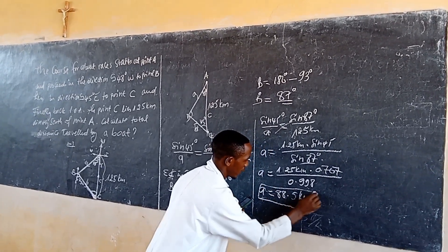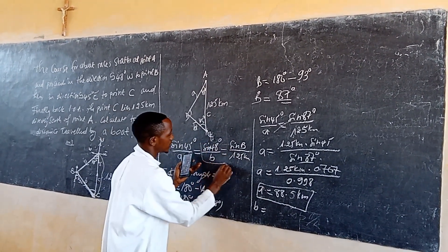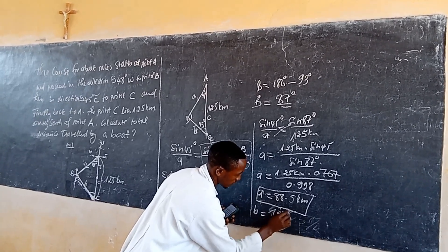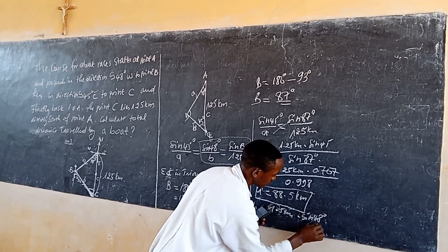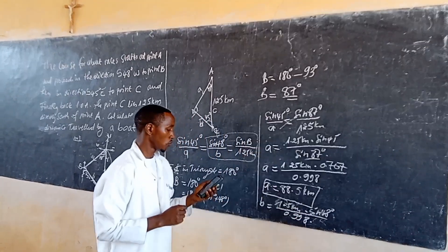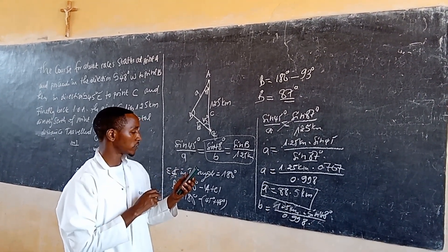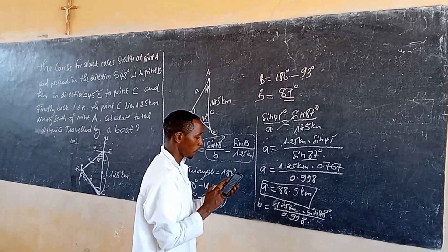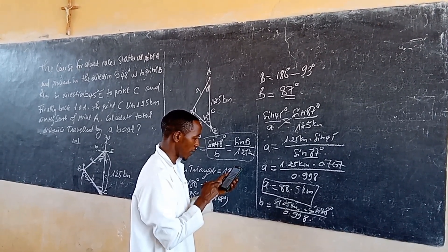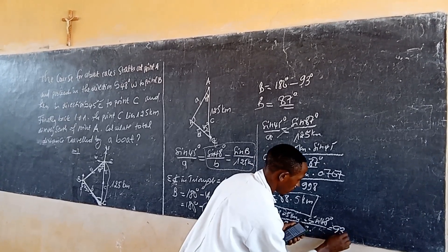So this is the value of A. Now we can find the value of B. To find B we use the same formula: B equals 125 km times sine of 48° divided by sine of 87°. Sine of 48° equals 0.743, so B equals 125 × 0.743 ÷ 0.998, which equals approximately 93.0 km.